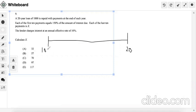Each of the first 10 payments equals 150% of the amount of interest due. So what does that mean? Well, the first thing is, what is the amount of interest due? We have to take the loan amount times 10% because the lender charges interest at an annual effective rate of 10%.